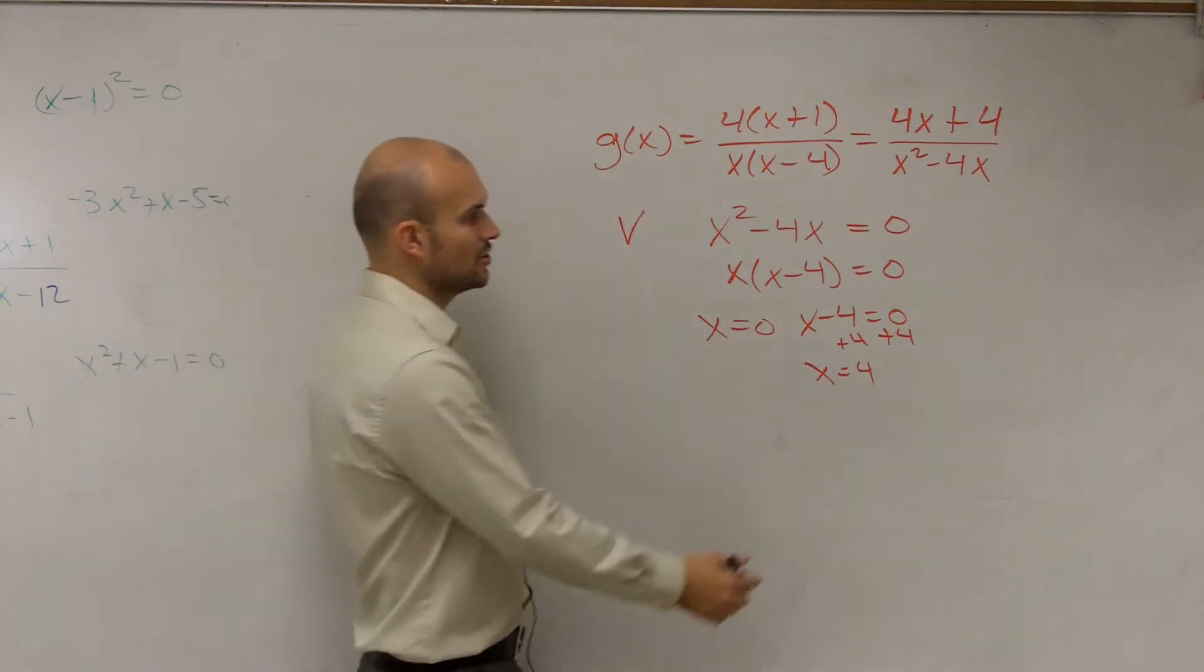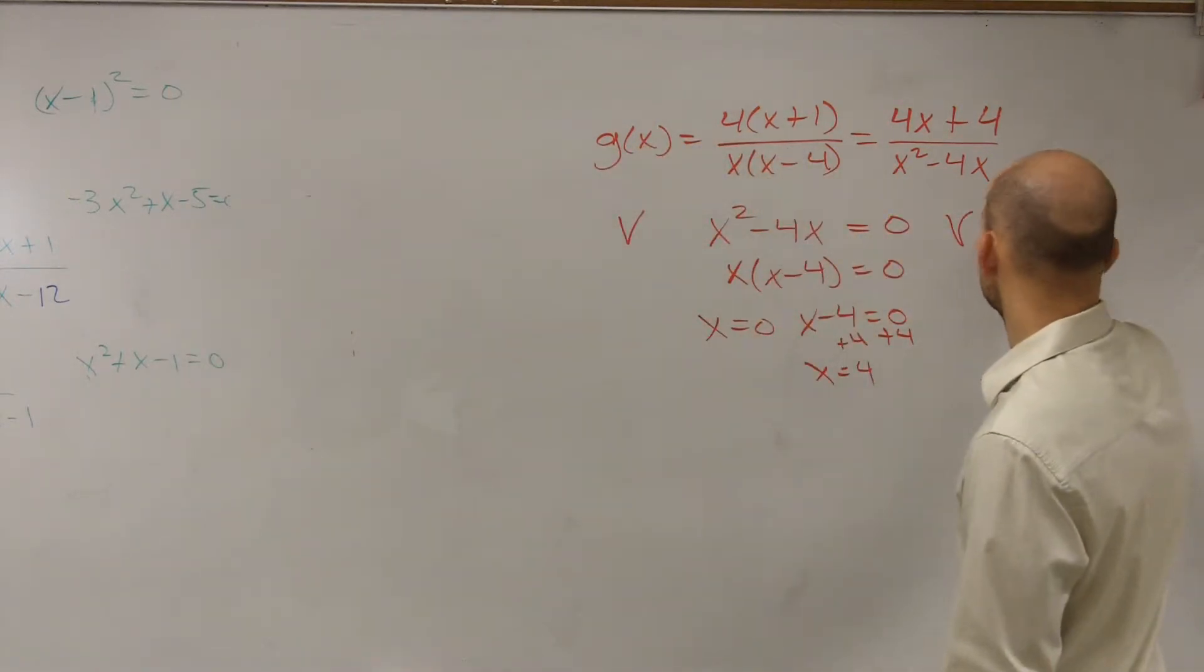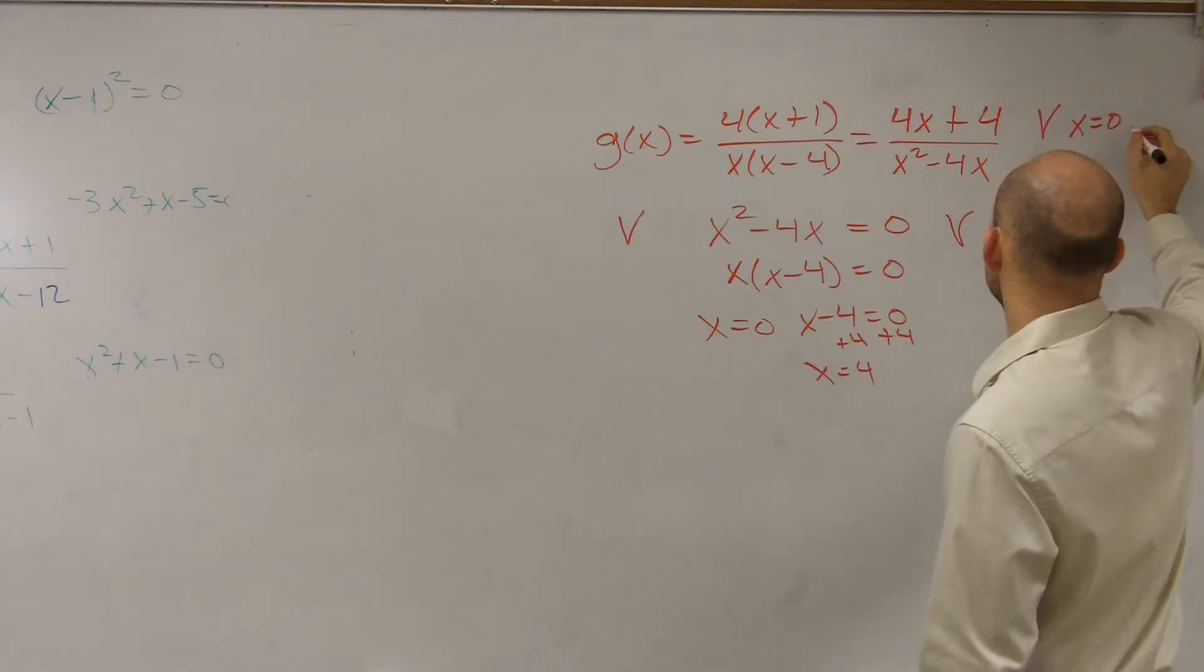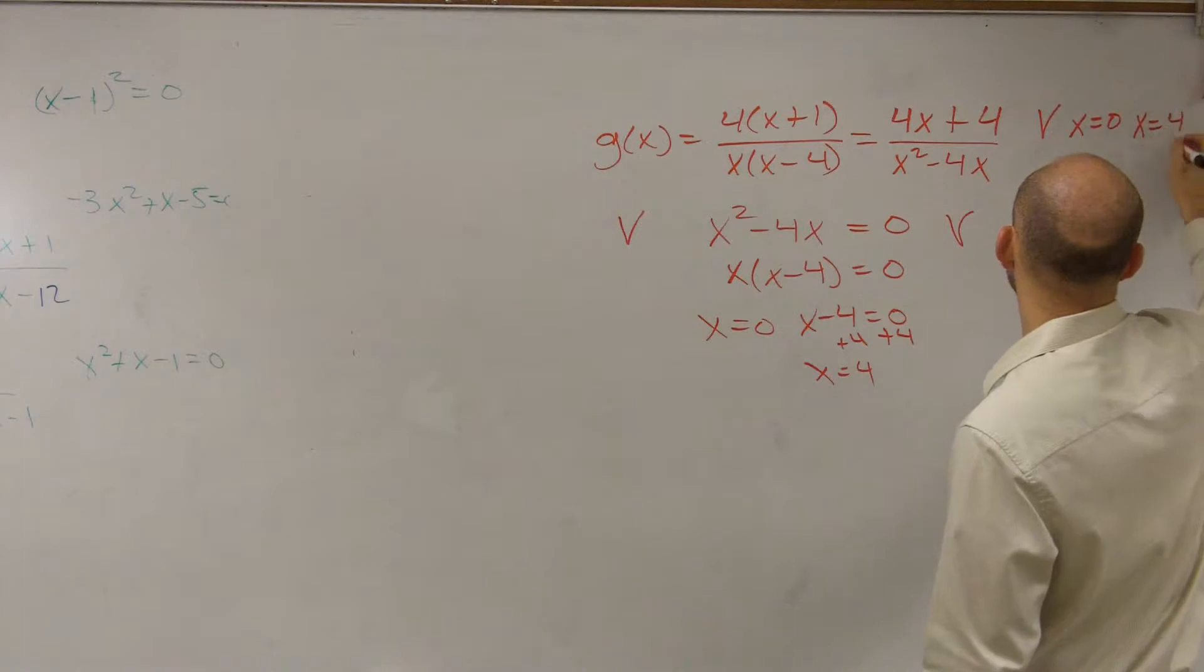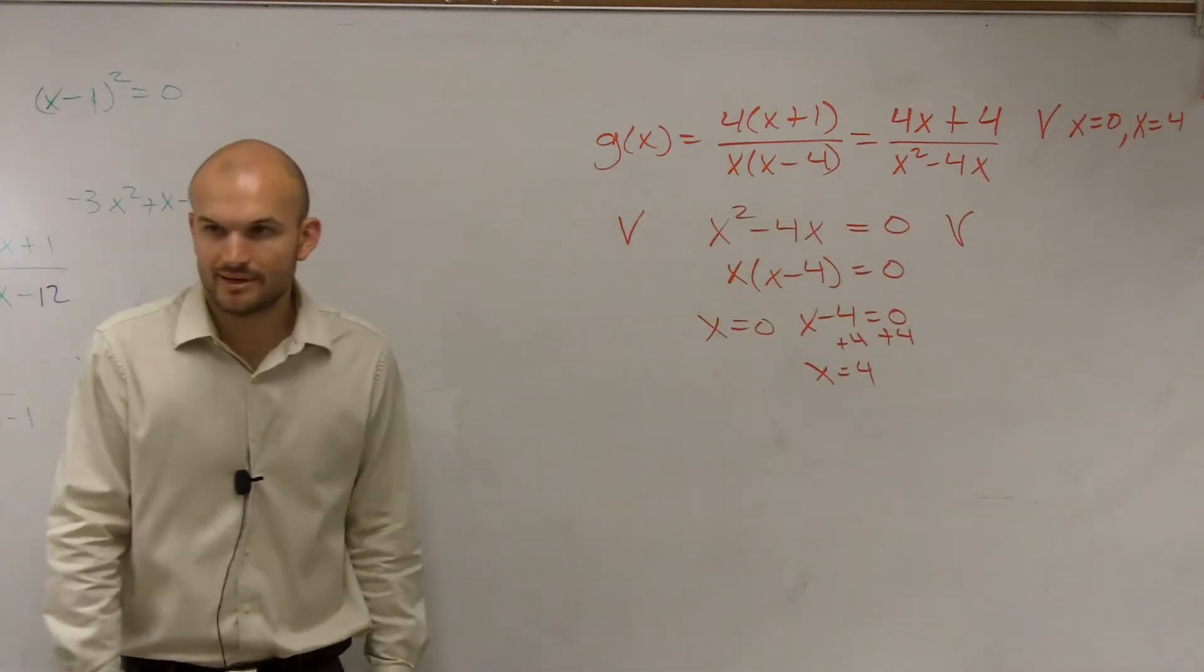So now your vertical asymptotes - your little lines where your graph is going to approach - are going to be at x equals 0 and x equals 4. So those are your two vertical asymptotes.